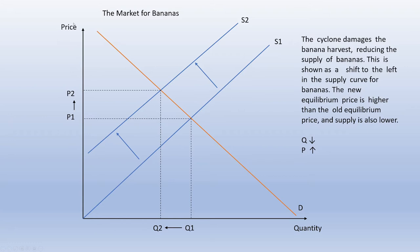We have our typical supply and demand diagram — price on the vertical axis, quantity on the horizontal — with a demand curve and an original supply curve. The cyclone damages the banana harvest, reducing the supply of bananas, so we have a shift to the left with a new supply curve S2. We intersect the demand curve at a new equilibrium: a higher price — which makes sense, bananas are harder to get — and a lower quantity, as people are less willing to purchase bananas at that price.